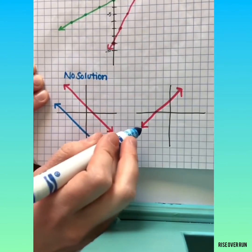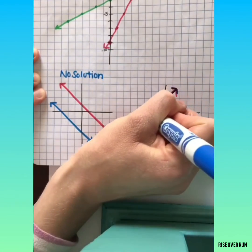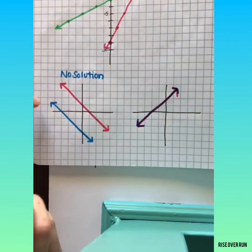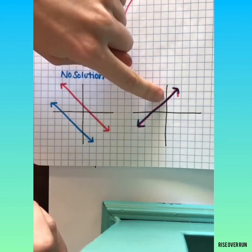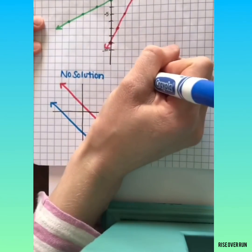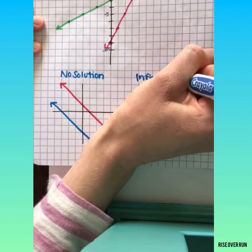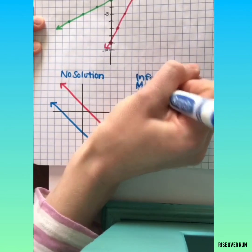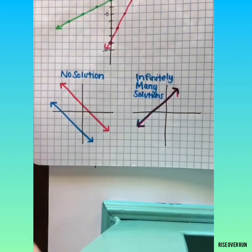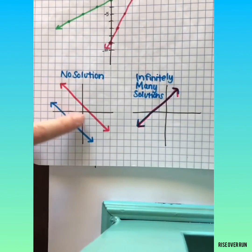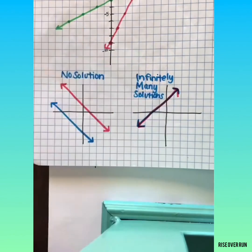If you graph one line of the system and then you come along and graph the second line of the system and they're the exact same line, that means they share lots of points and that's infinitely many solutions. So both of these situations have same slopes but here the y-intercepts are different and here the y-intercepts are the same.